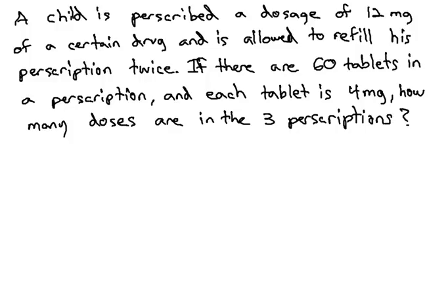Here, we have a child who is prescribed a dosage of 12 milligrams of a certain drug. He is allowed to refill his prescription twice. If there are 60 tablets in a prescription, and each tablet has 4 milligrams, we want to know how many doses are in the 3 prescriptions. There's 3 because there's the original plus the 2 refills, 3 prescriptions.